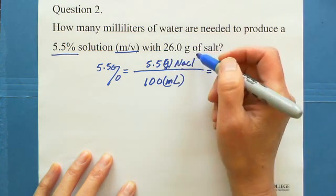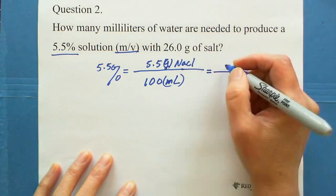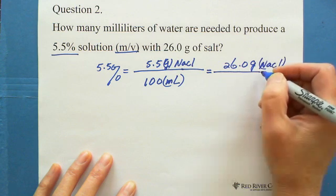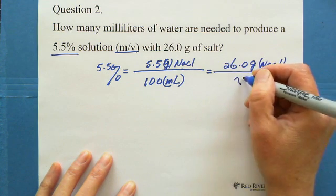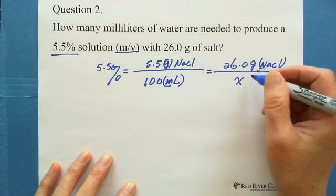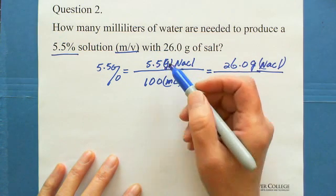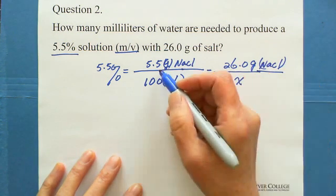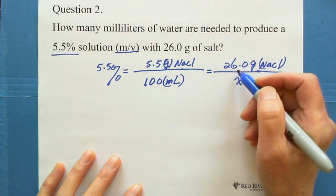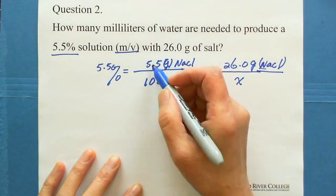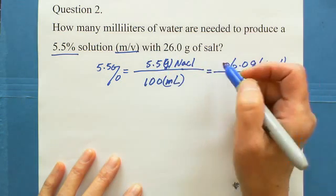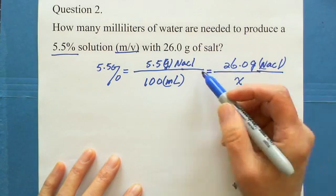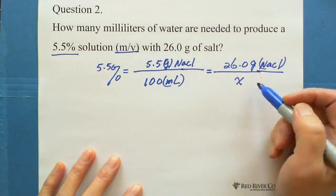Now we have 26 grams of salt and need to find the final volume. If 5.5 grams needs 100 milliliters, then 26 grams is much more — almost 4 times — so we'd predict over 400 milliliters. This is a ratio and proportion: more solute means more solution needed.